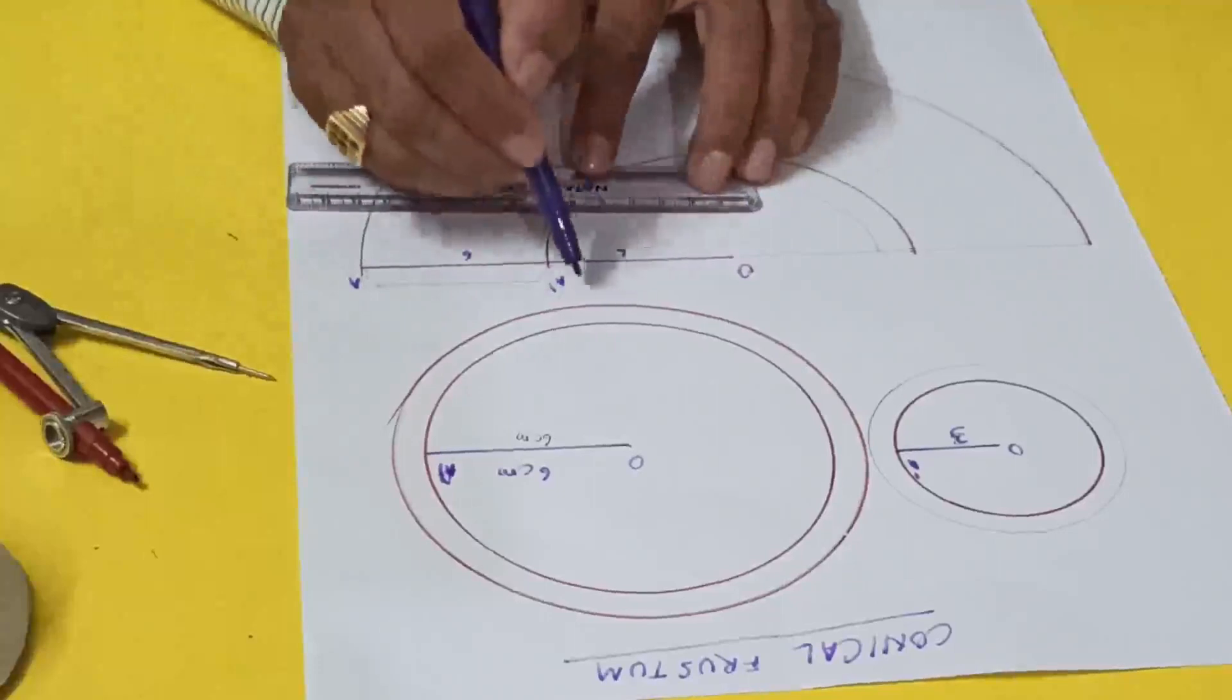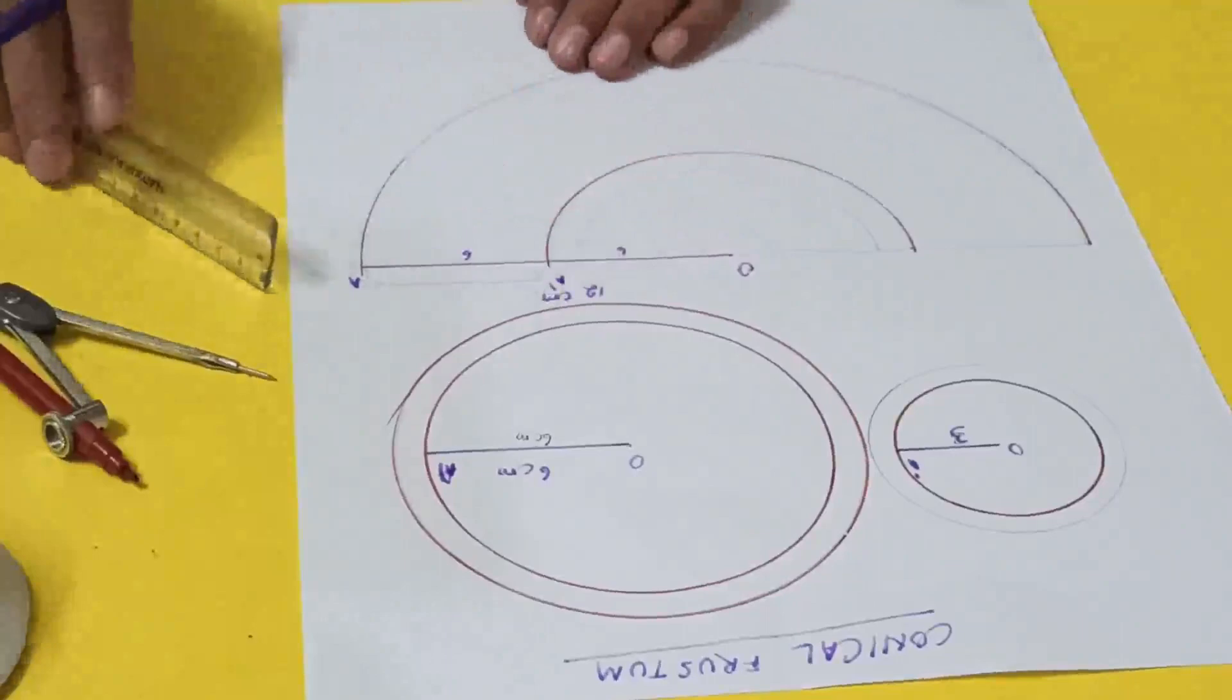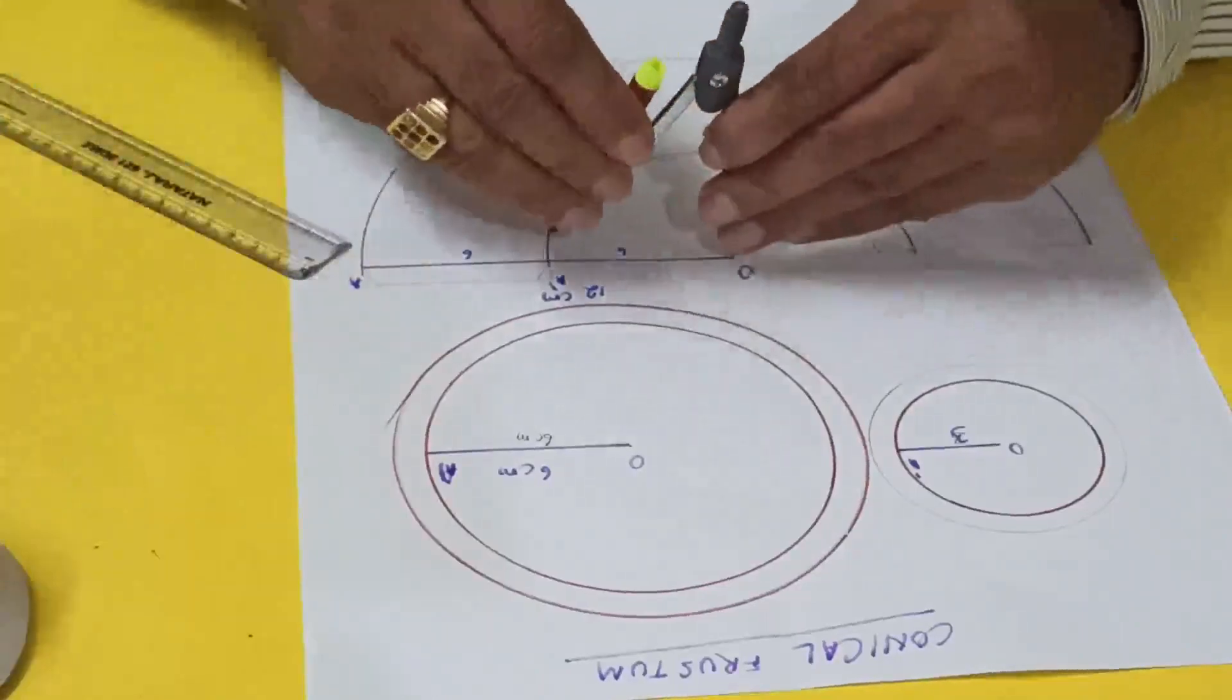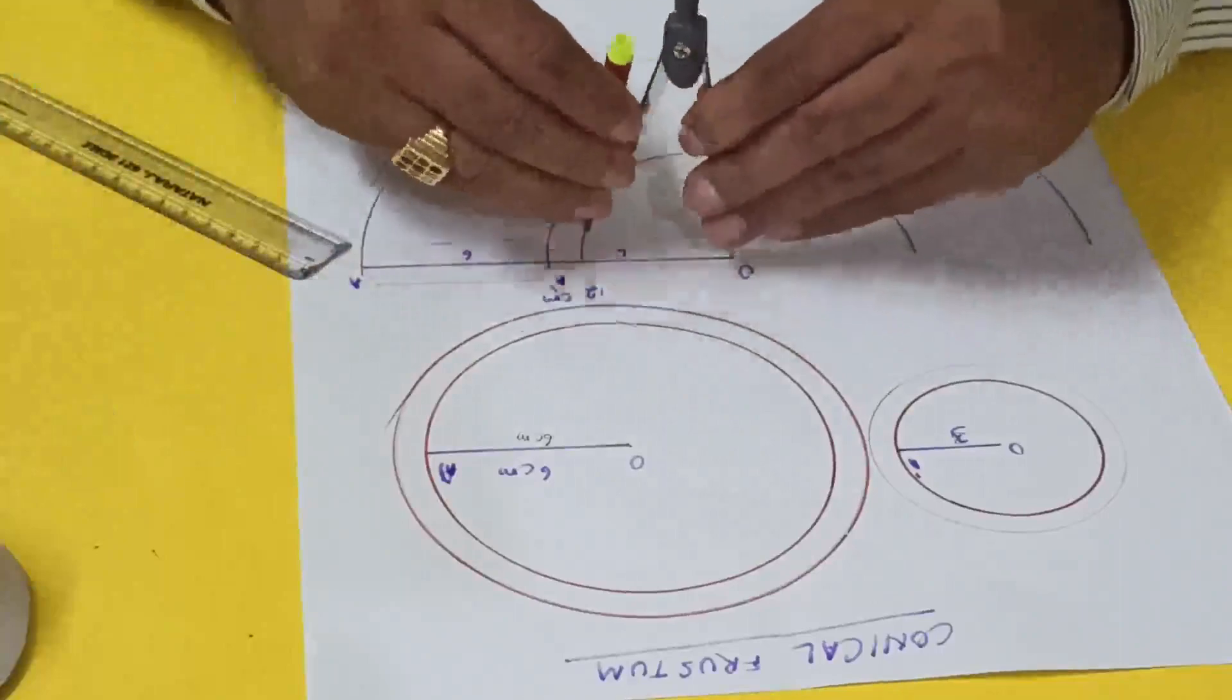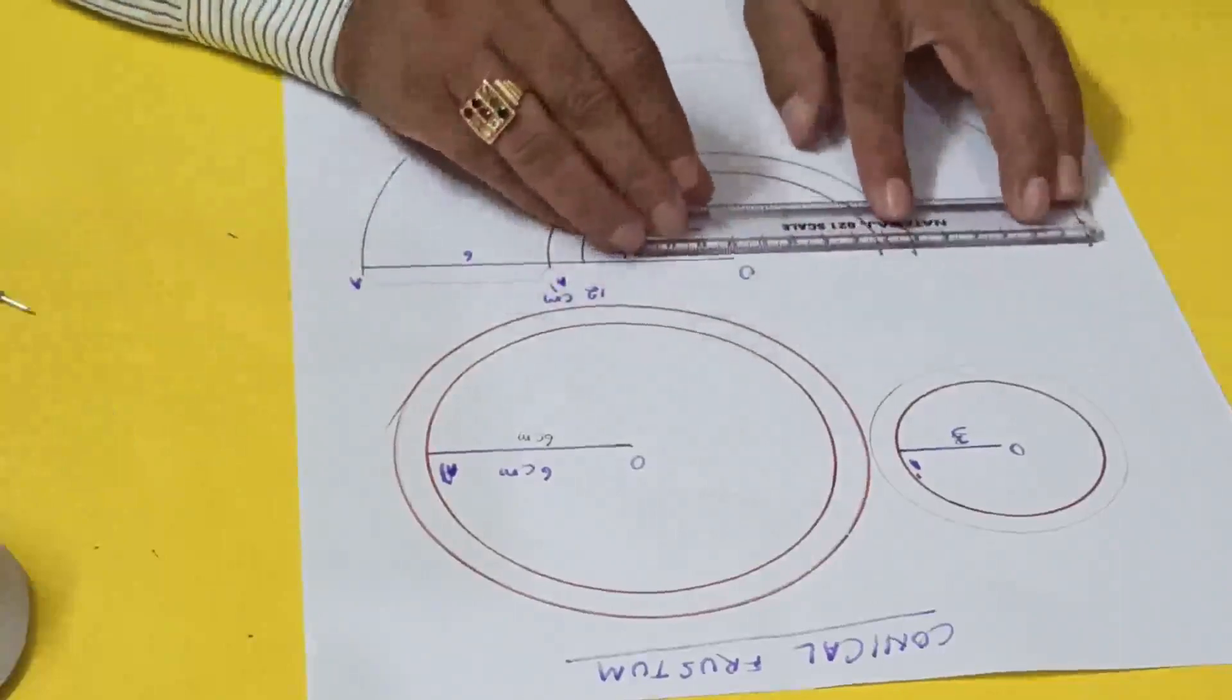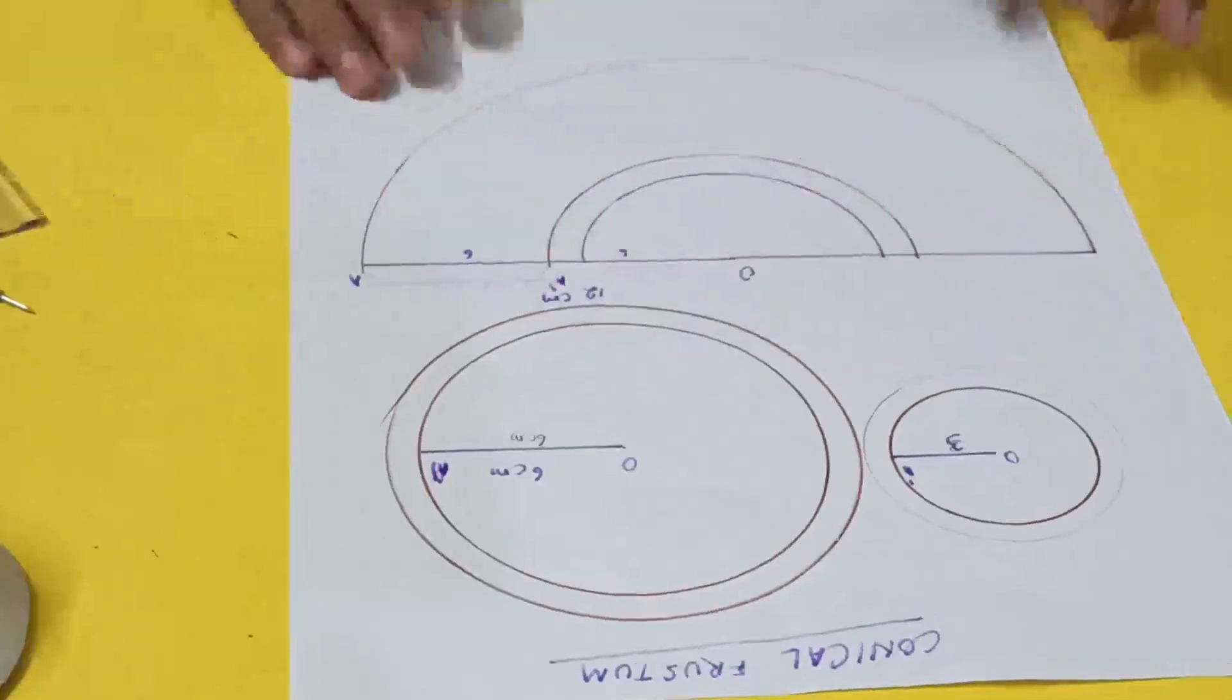Now I'll draw the border. So this is the border, the inner border, and this one I'll also join—my border.